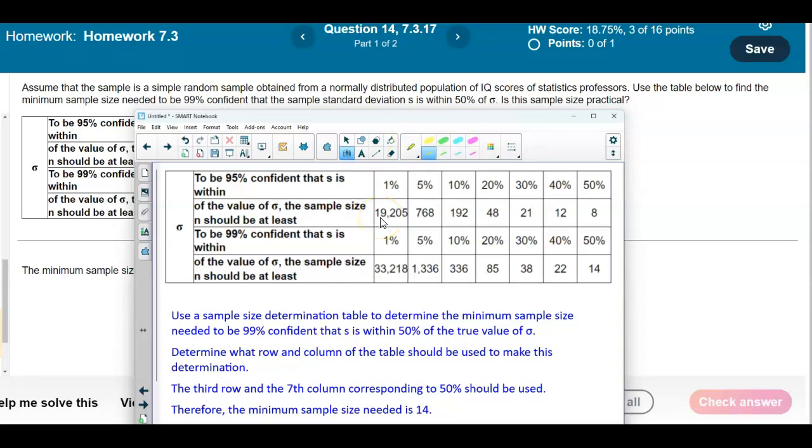We're looking for 99% confidence to be within 50%. Use the sample size determination table to determine the minimum sample size needed to be 99% confident that s is within 50% of the true value of the population standard deviation. We want to determine what row and column to use for this determination. The third row and seventh column corresponds to 50%, which is here.